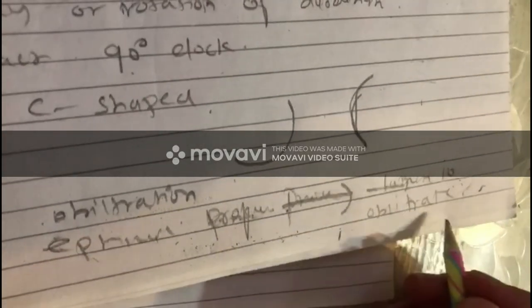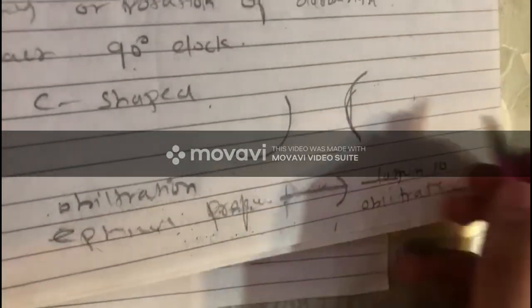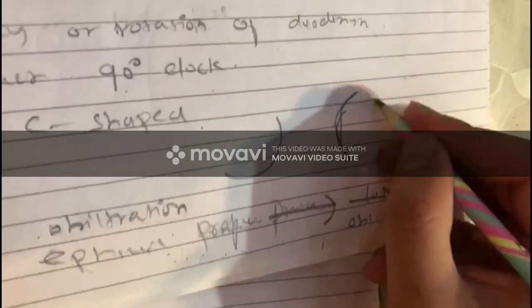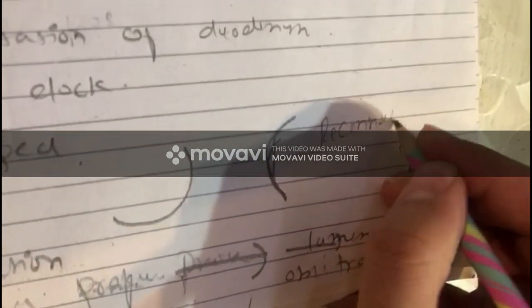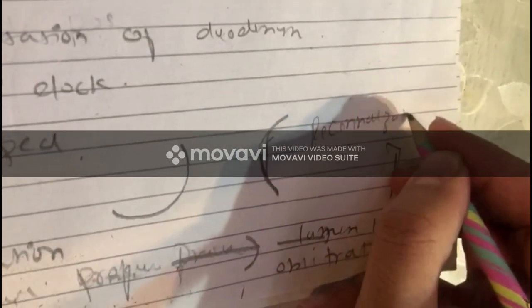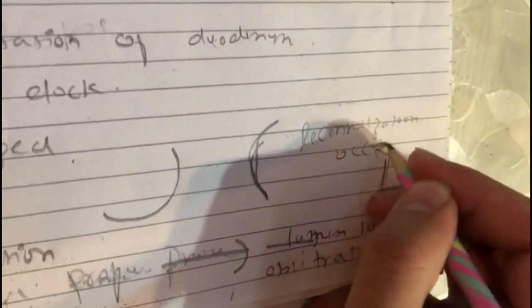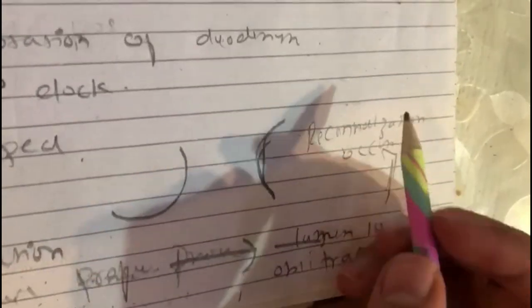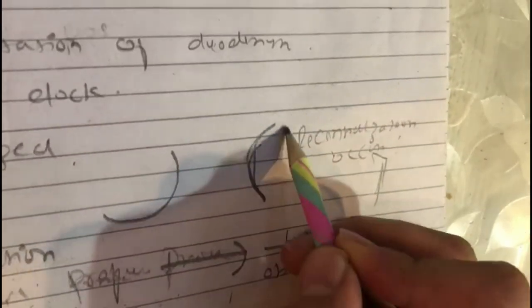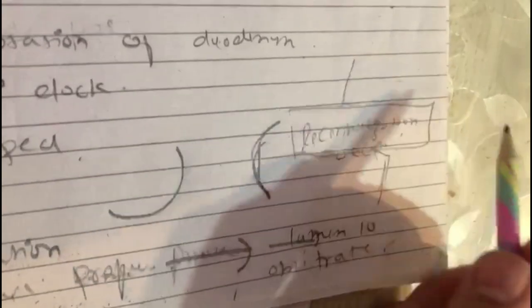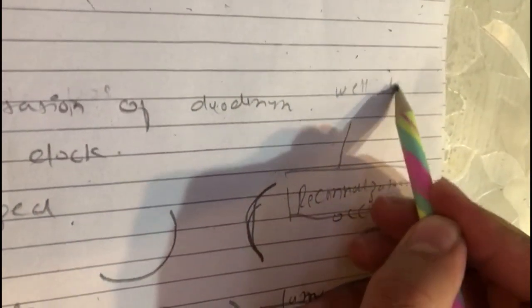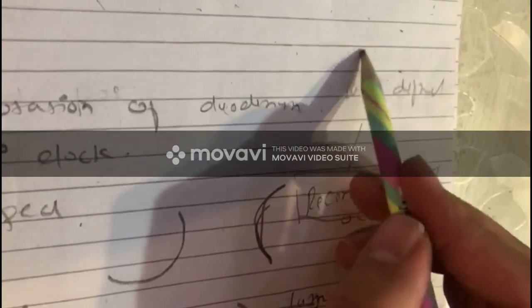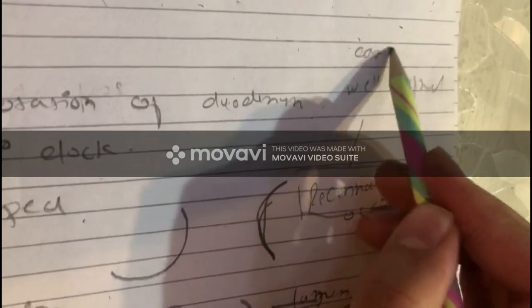After obliteration, the process of re-canalization occurs. Re-canalization leads to a well-defined final form of the duodenum canal.